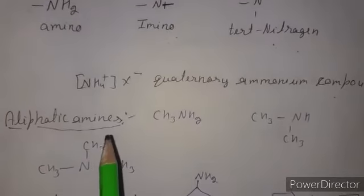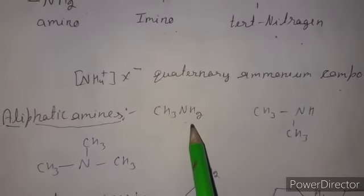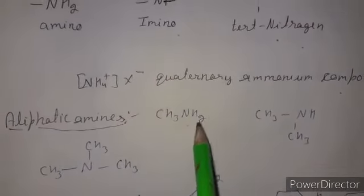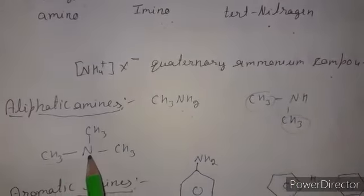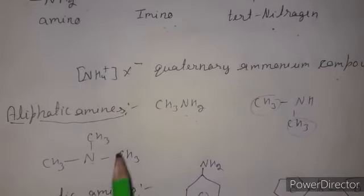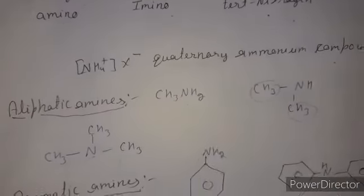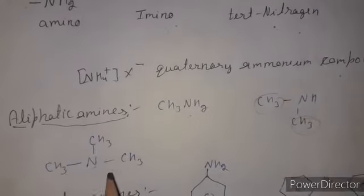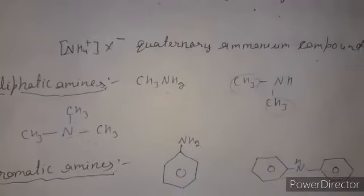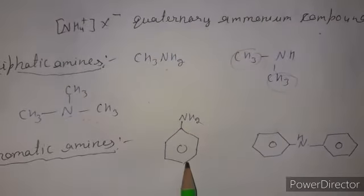Amines are first classified into aliphatic and aromatic amines. Methylamine is a primary aliphatic amine. Dimethylamine is a secondary amine because two alkyl groups are attached to the nitrogen atom. Trimethylamine is a tertiary amine when three hydrogens are replaced by three alkyl groups. These are aliphatic amines — methylamine, dimethylamine, and trimethylamine.